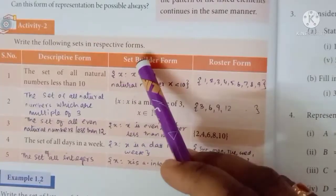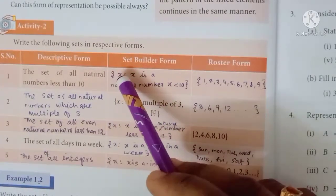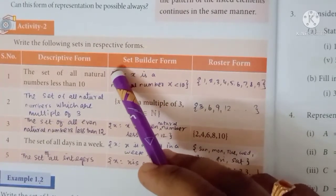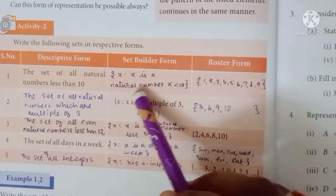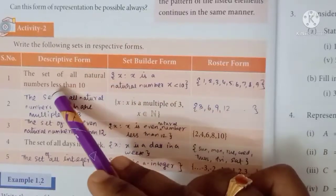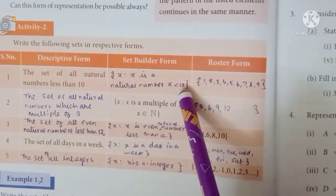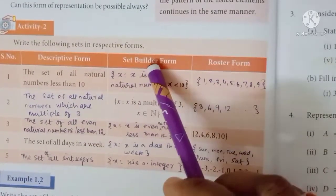So we will fill the set builder form and the roster form. For the set builder form, this is the set symbol, this is the variable x such that - this is the name such that - x is a natural number, and x should be less than 10. This is the set builder form.